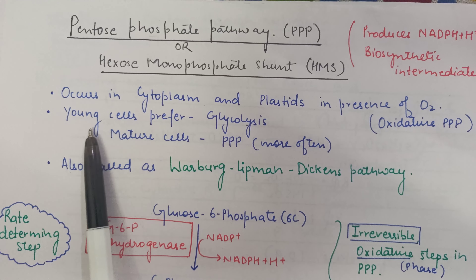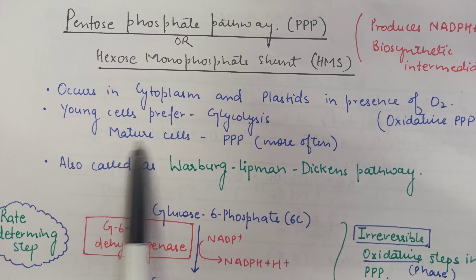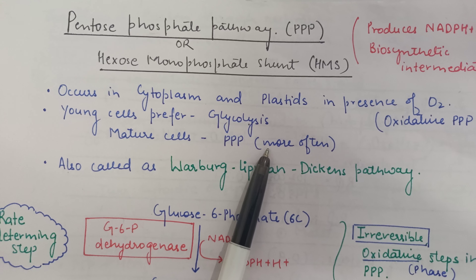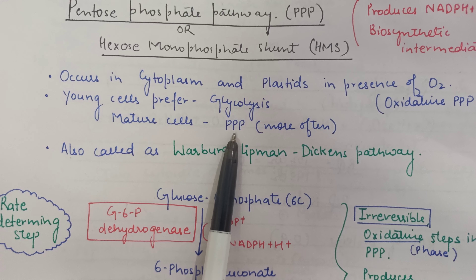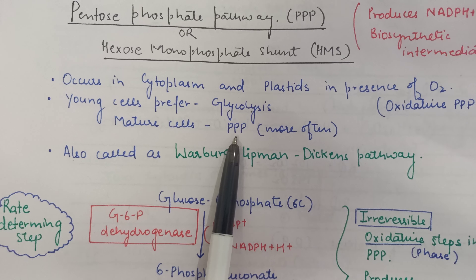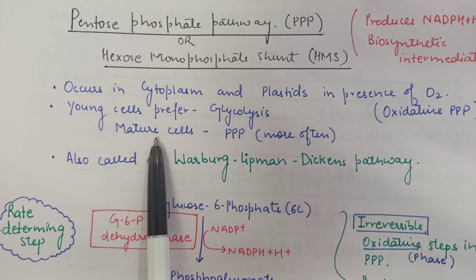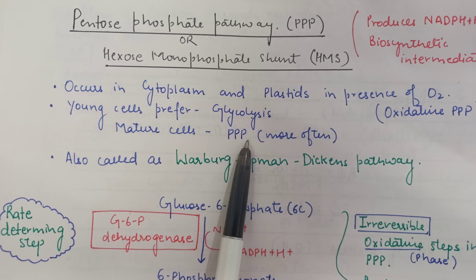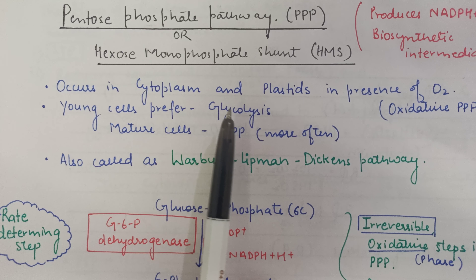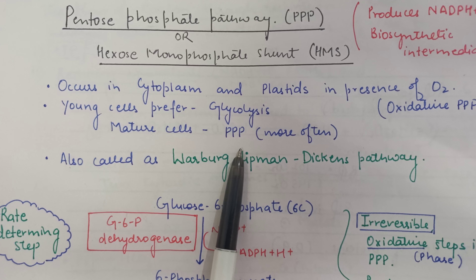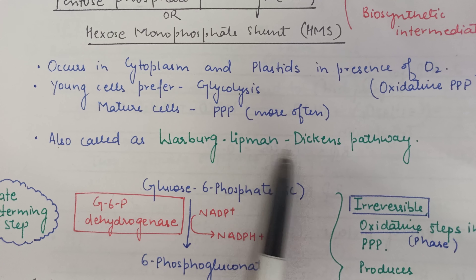Glycolysis is majorly preferred by younger, smaller, newer cells, whereas in mature cells the pentose phosphate pathway occurs more often. The reason is that this pathway supports biosynthesis of many molecules such as DNA, RNA, lipids, and proteins. Young cells need a lot of energy to grow so they prefer glycolysis, while mature cells, having completed their growth phase, mostly undergo biosynthesis via the pentose phosphate pathway. This pathway is also called the Warburg-Lipman-Dickens pathway after the scientists who worked on it.